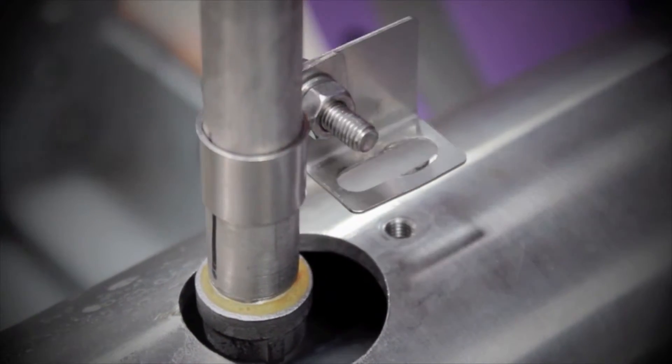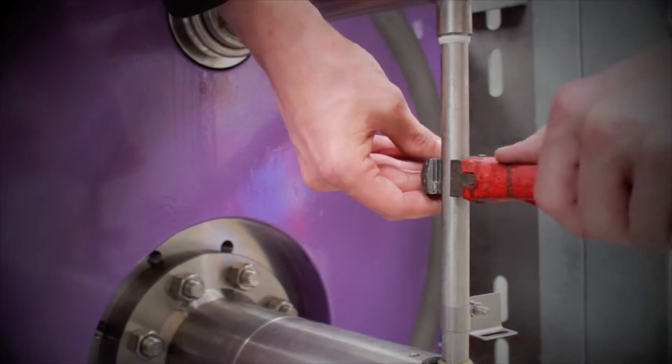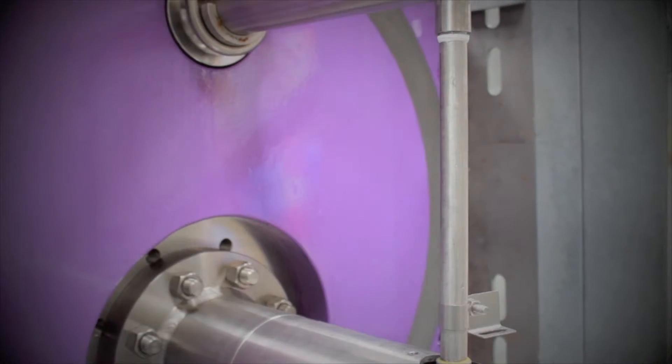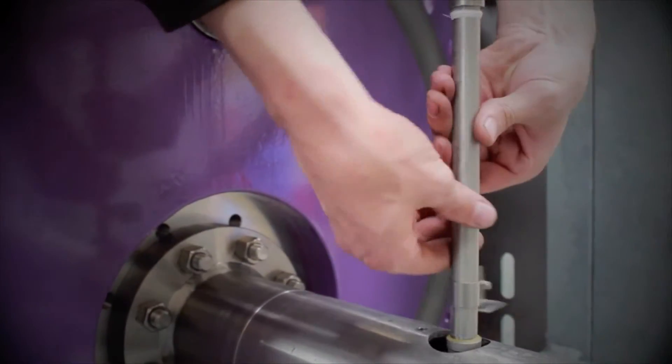The feed pipe is threaded, so using a suitable pair of Stilsons, loosen the pipe by rotating clockwise. Finish by hand, releasing it from the delivery pipe and remove.